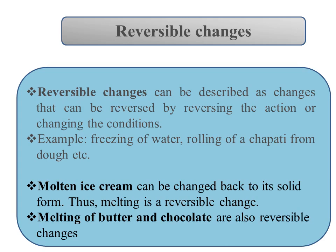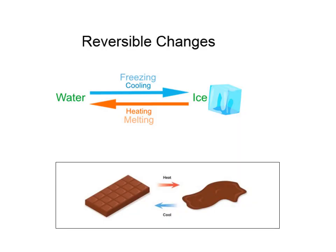Examples of reversible changes include melting, boiling, evaporation, condensation, freezing of water, and rolling of chapati from dough. Here I have given two examples: molten ice cream can be changed back to its solid form, thus melting is a reversible change. Melting of butter and chocolates are also reversible changes.